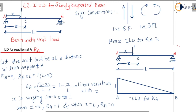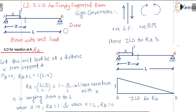We need to draw the influence line diagram for the support reactions. We will draw ILD for reaction at A, ILD for reaction at B, we also need to find ILD for shear force at C, and ILD for moment at C.